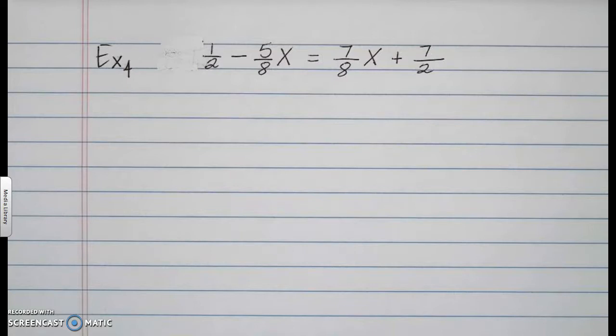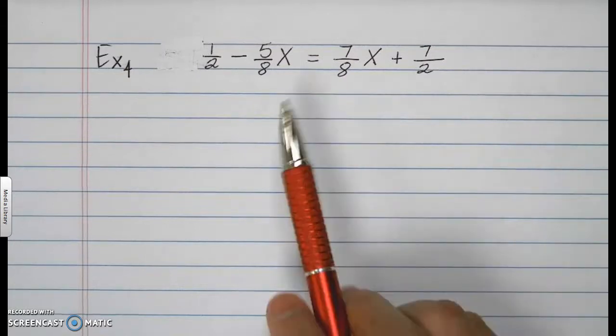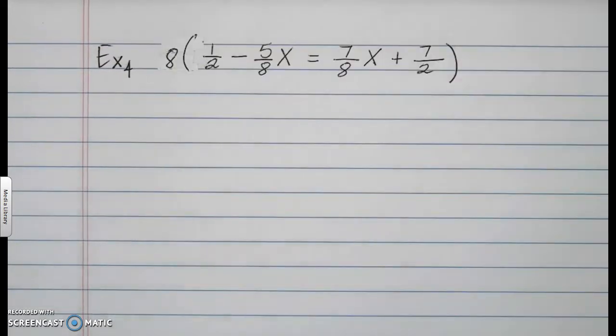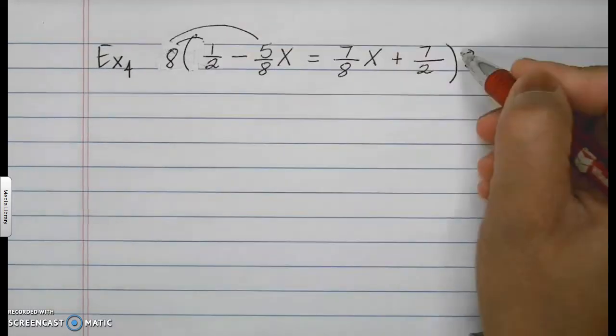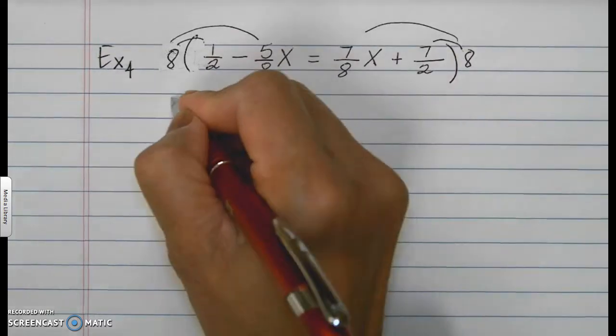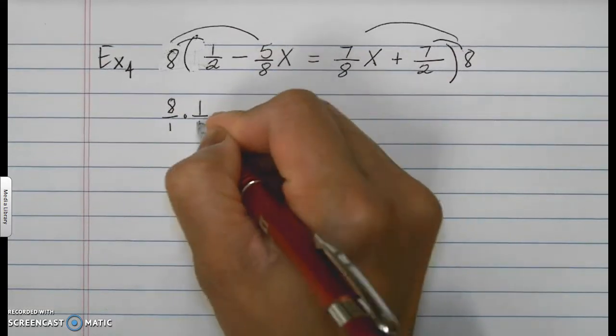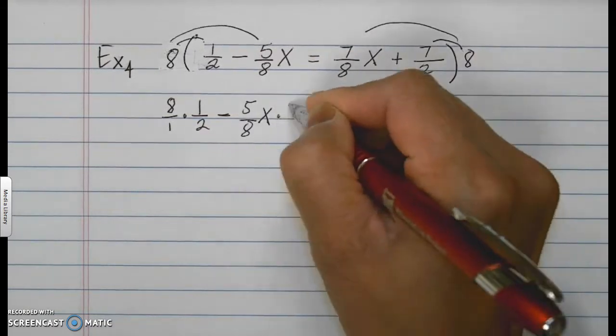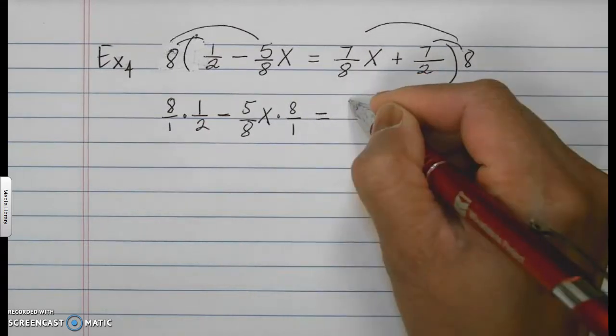So 1 half minus 5/8x equals 7/8x plus 7 over 2. The first thing you will have to do is to get rid of the denominators. What we do not like is to operate with the denominators. And so, the way to do that is to get their LCD. And the least common denominator for this one is 8. So, the LCD is 8. And that's what I'm going to use to multiply both sides by. I'll multiply that by 8. I will multiply this by 8. And you know that when you multiply those by 8, it will distribute.